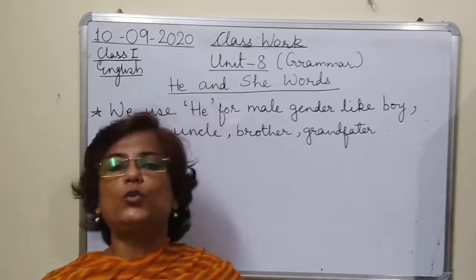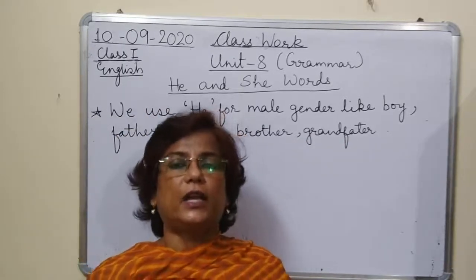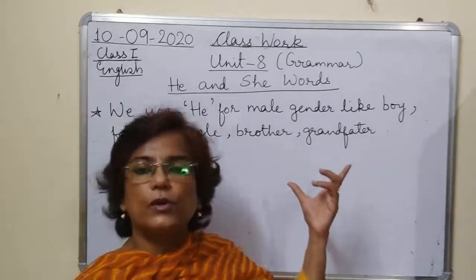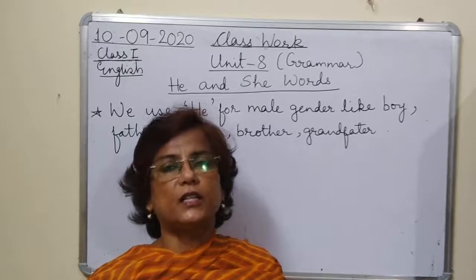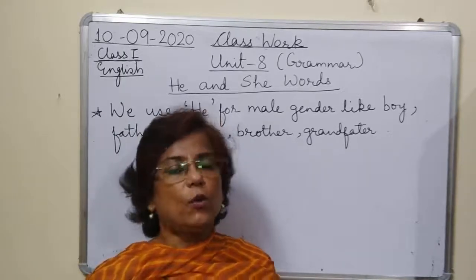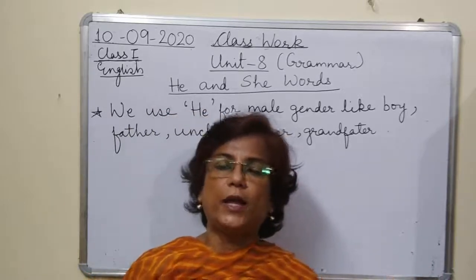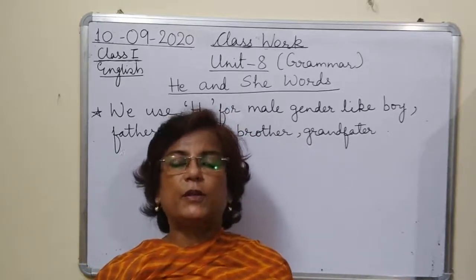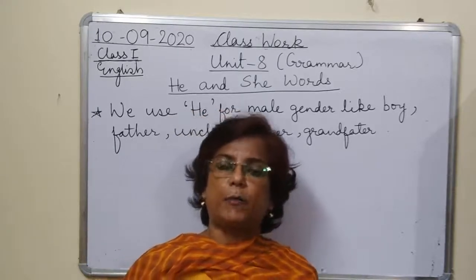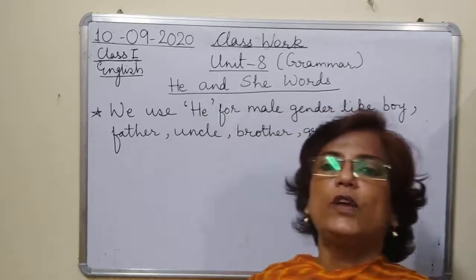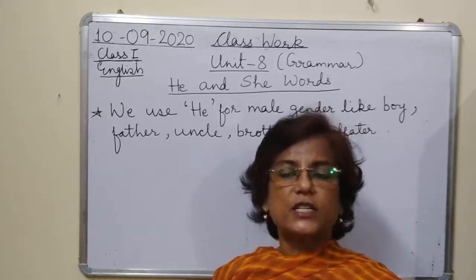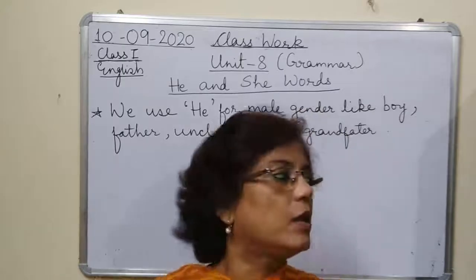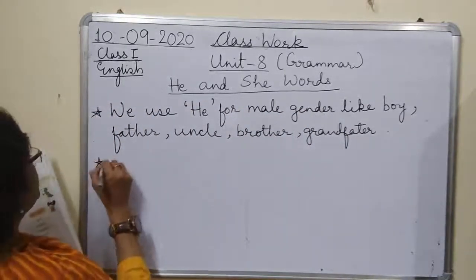We have already done this in one of the lessons in the main course book. When the same naming word is repeated again and again — repeated matlab dobrana — to uski jagah we use he, she, it. So we use 'he' for male genders and 'she' for female genders.